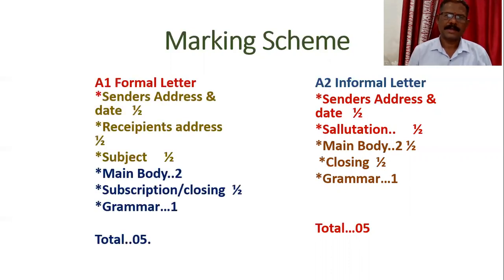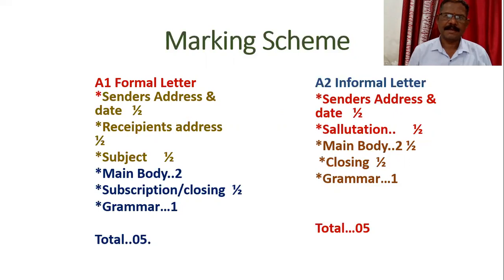For a Formal Letter, the marking scheme is: Sender's Address — half mark, Date — half mark, Recipient's Address — half mark, Subject — half mark, Main Body — 2 marks, Subscription or Closing — half mark, Grammar — 1 mark. Total: five marks. These are the differences between the two letters in terms of the marking scheme.